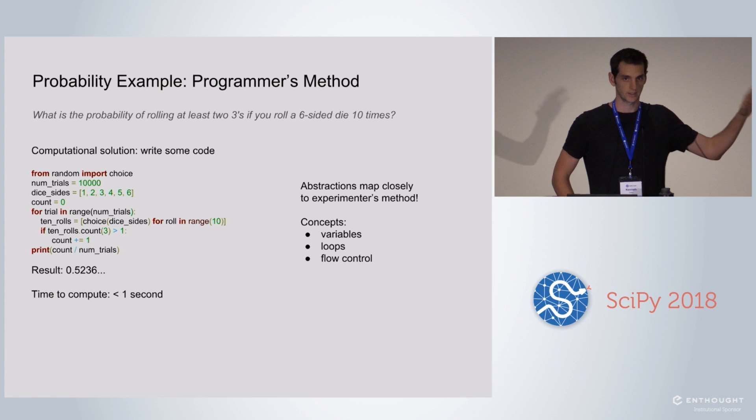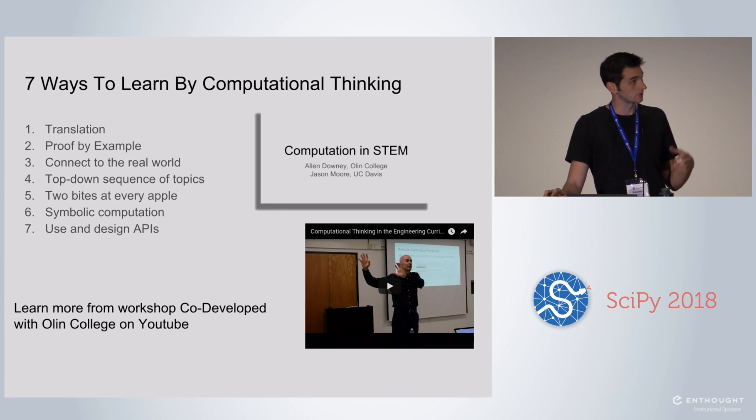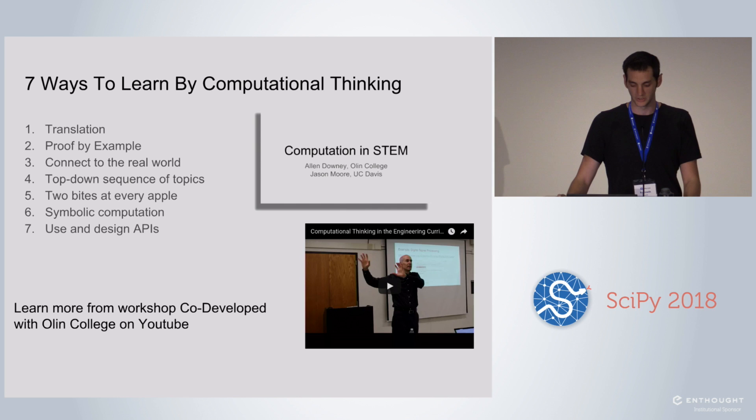So one thing you can do is write out some code. This pretty much exactly mimics the experimental method, but it does it with a computer, which is really good at doing that quickly. This is code that an undergraduate student, relatively experienced or somewhat experienced with programming, could produce and run in a pretty short amount of time and get a reasonable answer. It's not to say that you shouldn't teach mathematical modeling or how to do the statistical approach, but this is just another language, another way to think about how to do these problems. If you want to know more about computational thinking, you can see a workshop that Alan Downey and Jason Moore put together and did at UC Davis earlier this year.